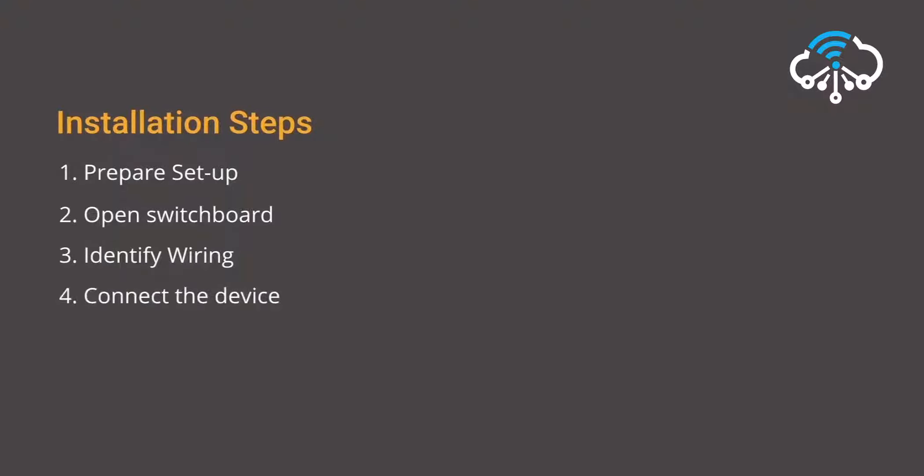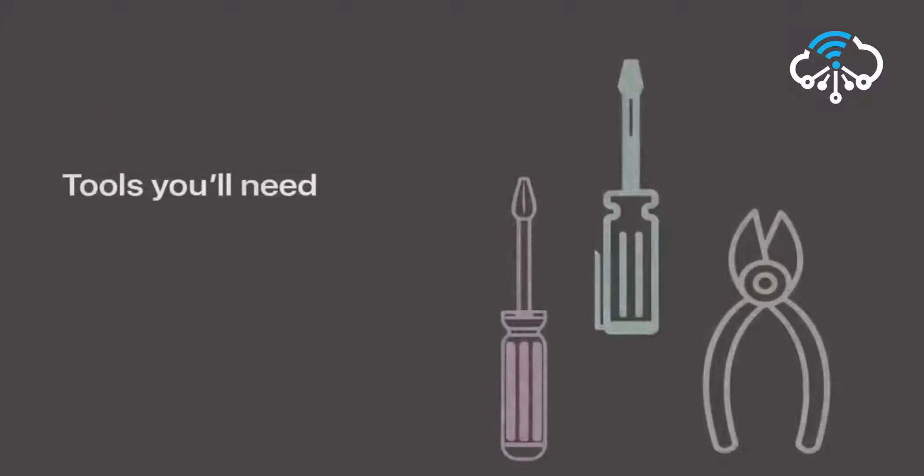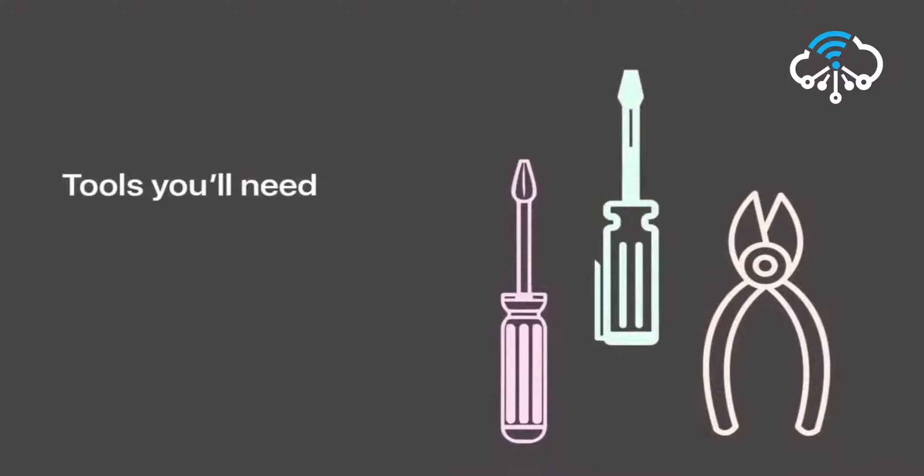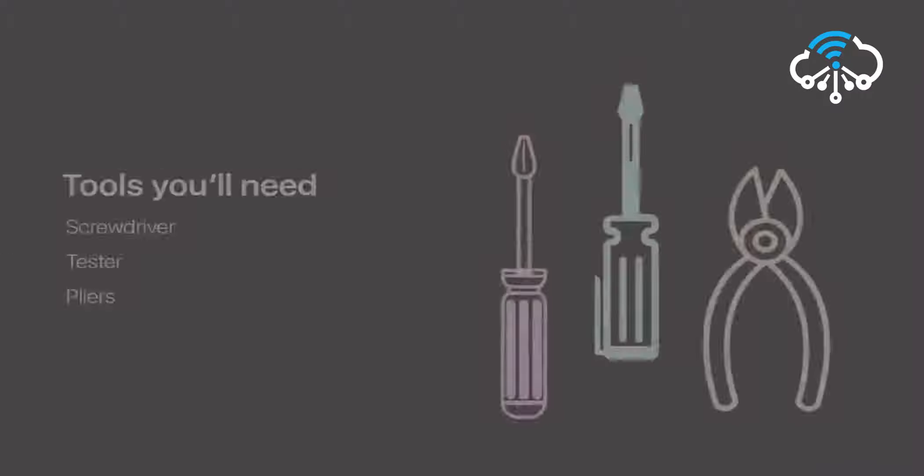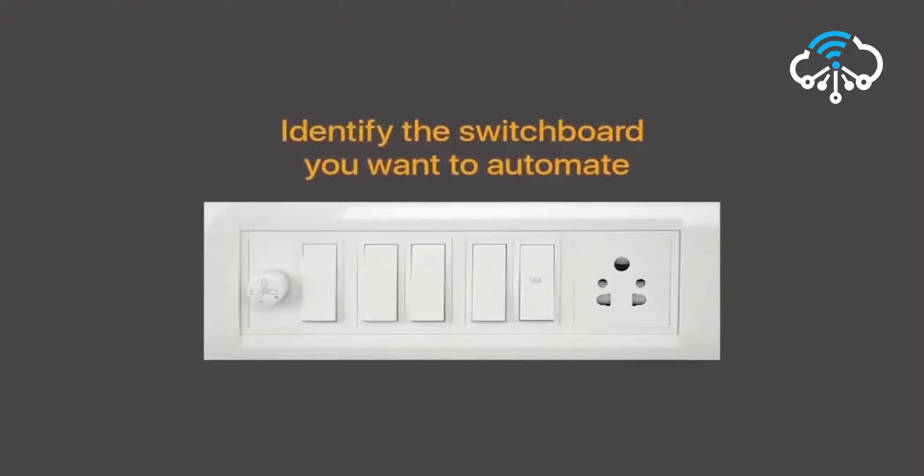Connect your device 16A HD module and test the device to ensure that the setup is done correctly. Step 1: Get ready to install. Collect all the tools required for the installation. For this you will need a screwdriver, tester, and pliers.